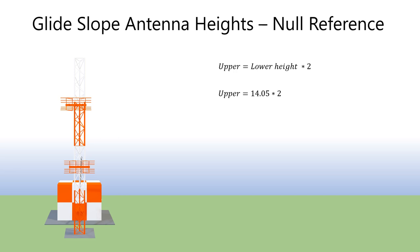And to find the upper antenna height, it's simply twice the height of the lower antenna, or 28.1 feet in this case.